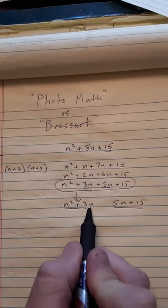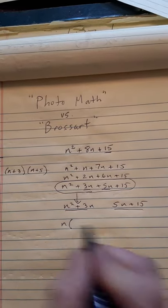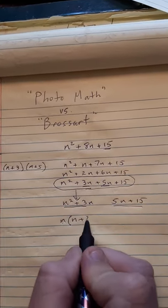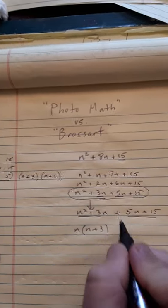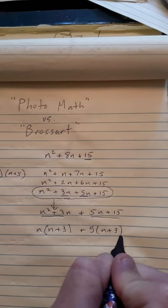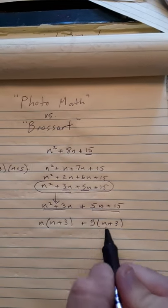Well, n² and 3n both have an n, and I'd be left with n² divided by n is n, and 3n divided by n is 3. And if this was still connected, 5n and 15 both have a 5.